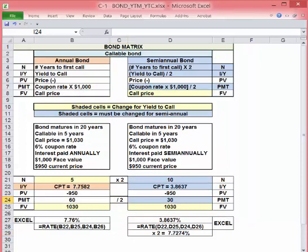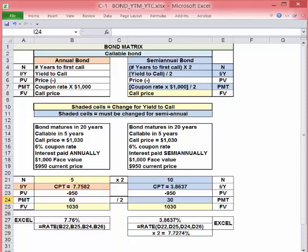We'll use the same basic bond example but make it callable in five years at a call price of $1,030. For the annual payer, two changes are required: N is now five, the number of years to the first call, and FV is now the call price, $1,030.